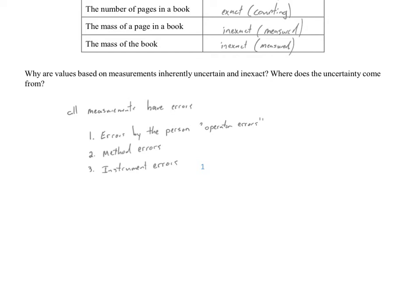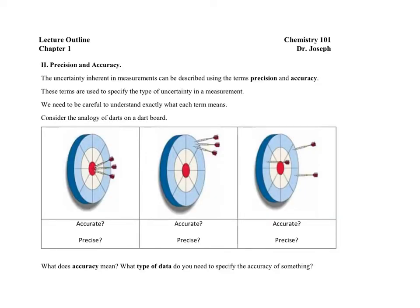Now that we've reached the end of page one, let's go to the next page and talk about another aspect of measurements: precision and accuracy. Now that we know measurements all have some error, let's more clearly define that error. The two words we use to distinguish types of measurement error are precision and accuracy. To understand these and the difference between them, let's look at a visual analogy using darts on a dart board.